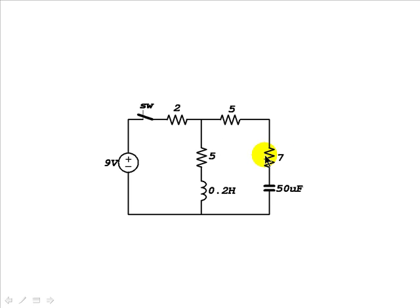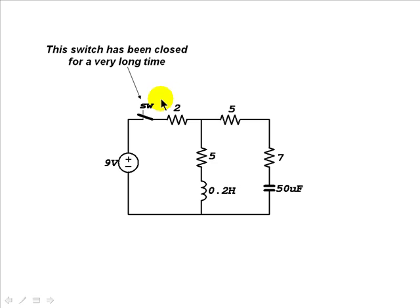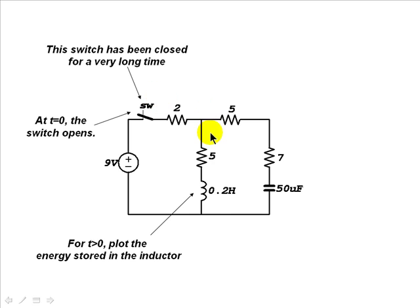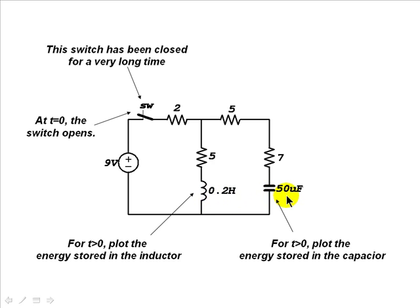We begin with this circuit. The switch SW has been closed for a very long time. At t equals zero, the switch opens. We want to find, for t greater than zero, the energy stored in the inductor, and do the same for the energy in the capacitor.